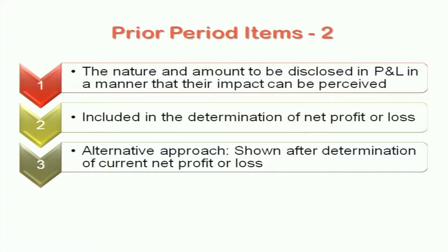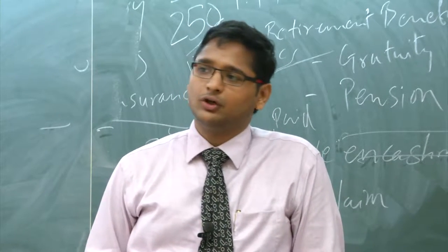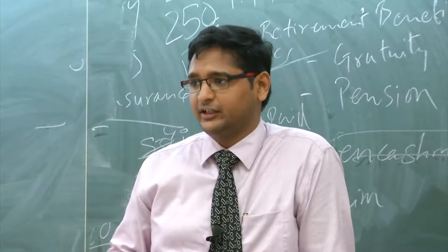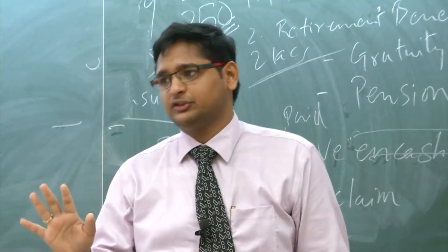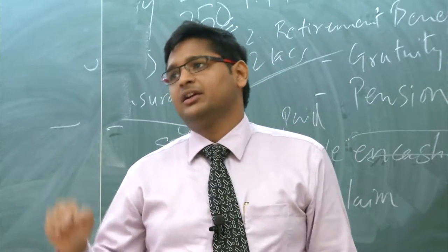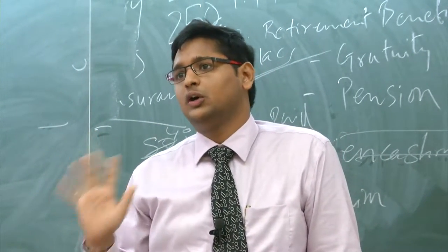When it is a prior period item — when you know it was an error or omission in the previous year — you should disclose the nature and amount in the profit and loss account and the impact on the current profit or loss account. Sometimes you can disclose it within the items itself. For example, if your opening stock is incorrect because the closing stock was incorrectly valued, there are two options: you can go and adjust the opening stock, or alternatively you show it separately as a prior period error. These are the two alternatives available.